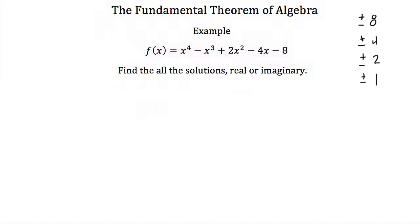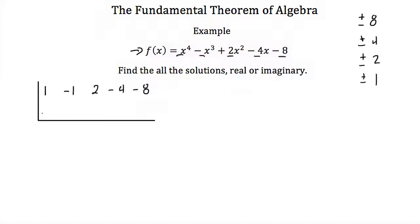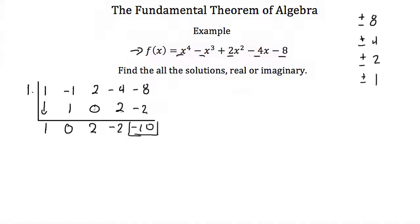The first one I'm going to test is positive 1. For synthetic division, we take our coefficients: 1, negative 1, positive 2, negative 4, and negative 8. We place positive 1 on the outside. Carrying down: 1 times 1 is 1; add to negative 1 to get 0; 0 times 1 is 0; add to 2 to get 2; 2 times 1 is 2; add to negative 4 to get negative 2; negative 2 times 1 is negative 2; add to negative 8 to get negative 10. Because we have a remainder of negative 10, positive 1 is not a solution.